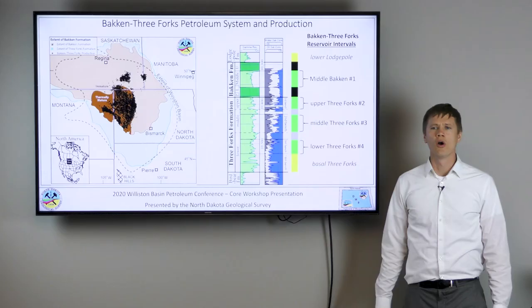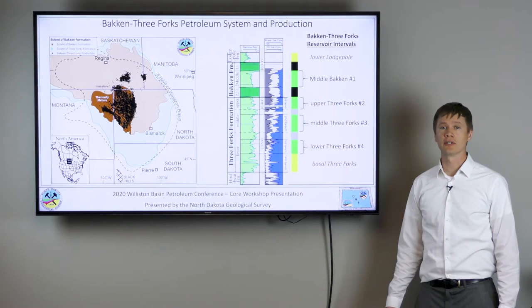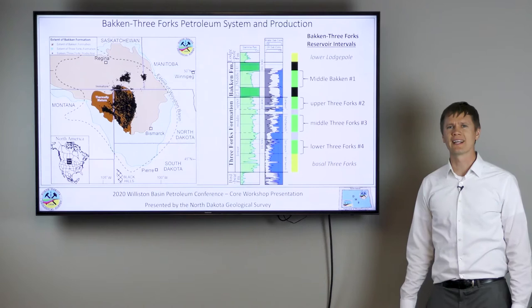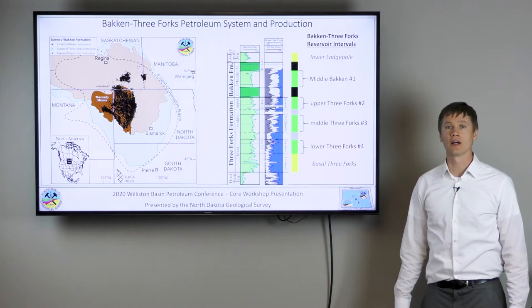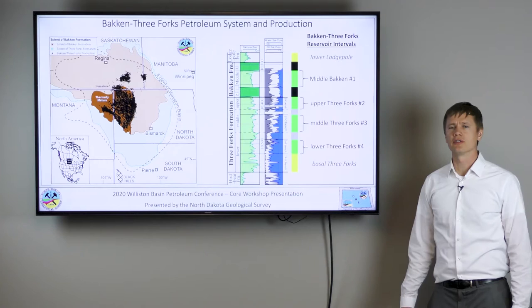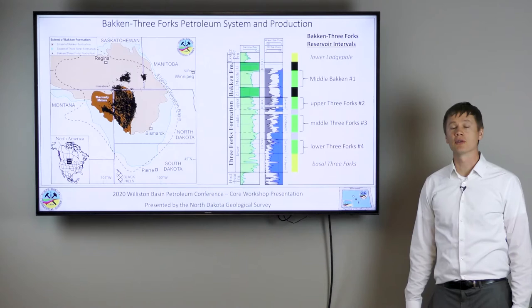Overall, there have been on the order of tens of thousands of wells drilled and completed in the Bakken Three Forks formation. Most are horizontal wells drilled in the last 15 to 20 years, hydraulically fractured to induce economic production. Within western North Dakota, the Bakken Three Forks is currently producing on the order of about a million barrels of oil per day, and cumulatively has produced over three and a half billion barrels of oil and counting.